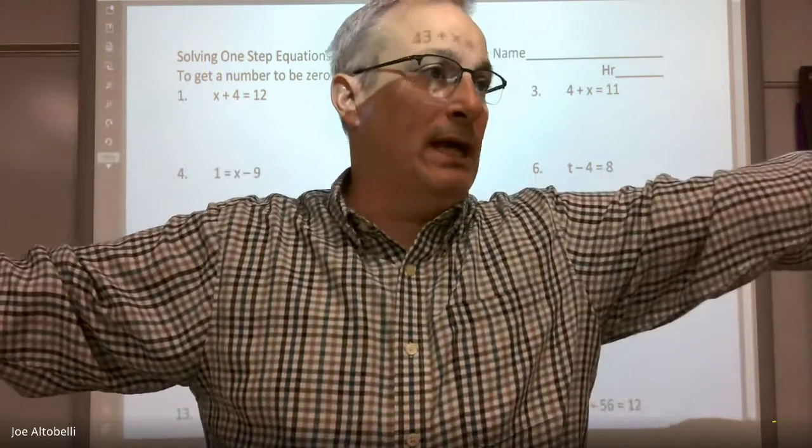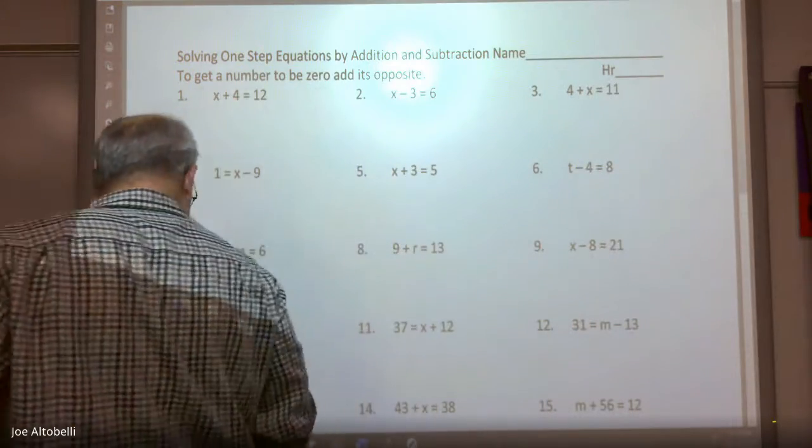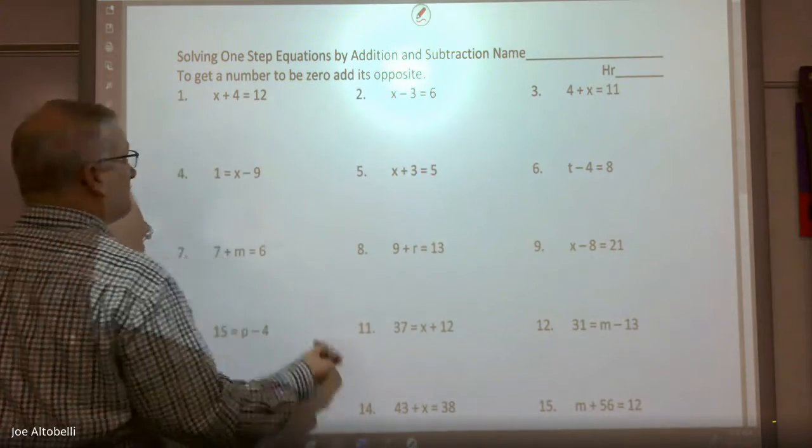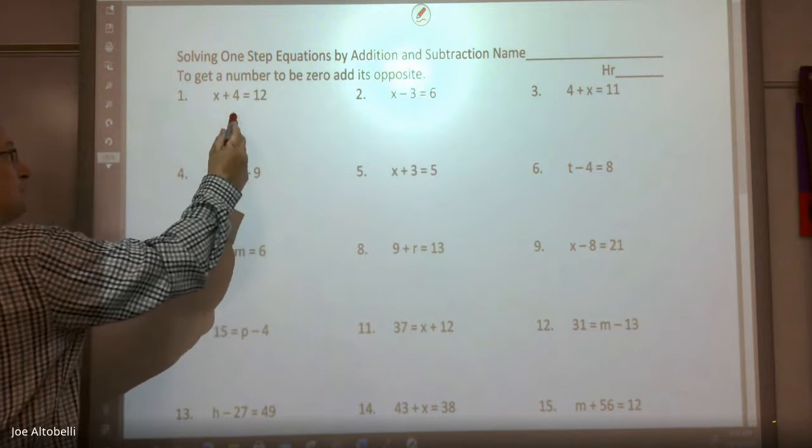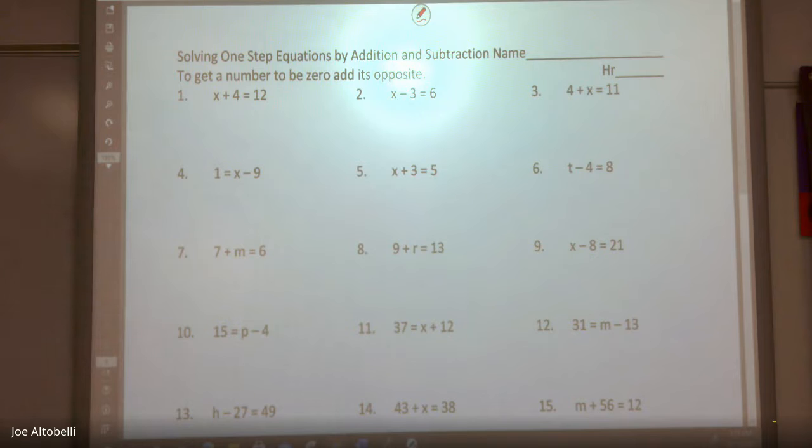We have x + 4 = 12. I want x by itself, so basically I want the 4 to go away. I still want the x, but I want the 4 to go away. There's multiple processes. Some of you might think subtract 4.